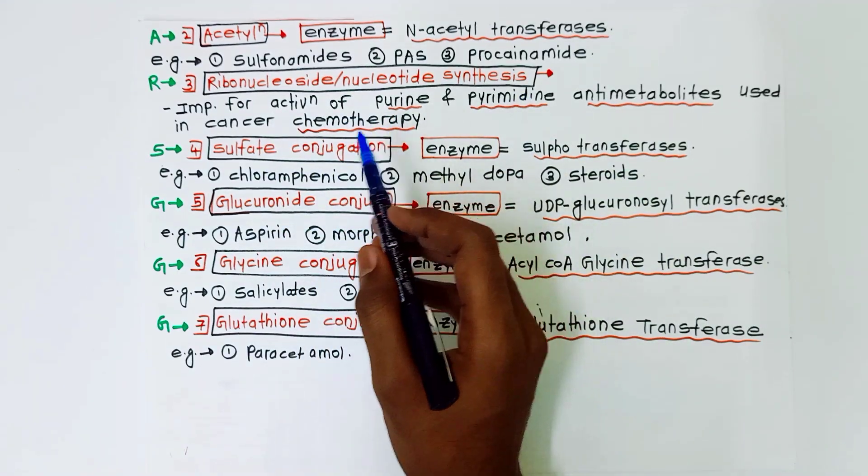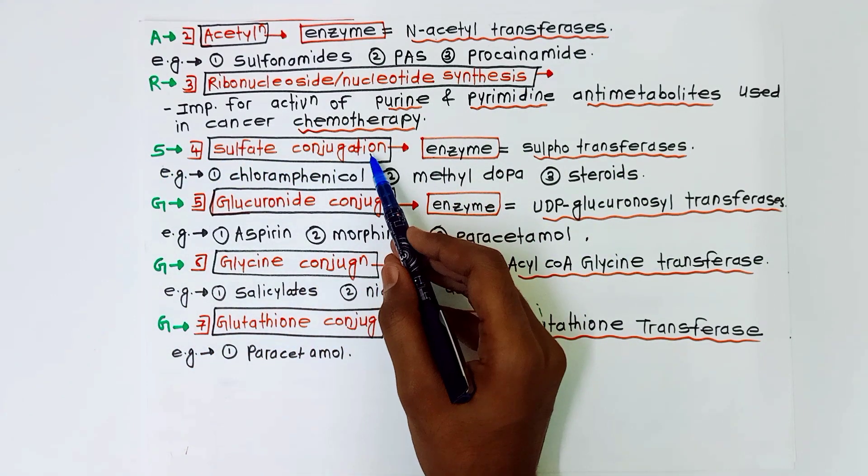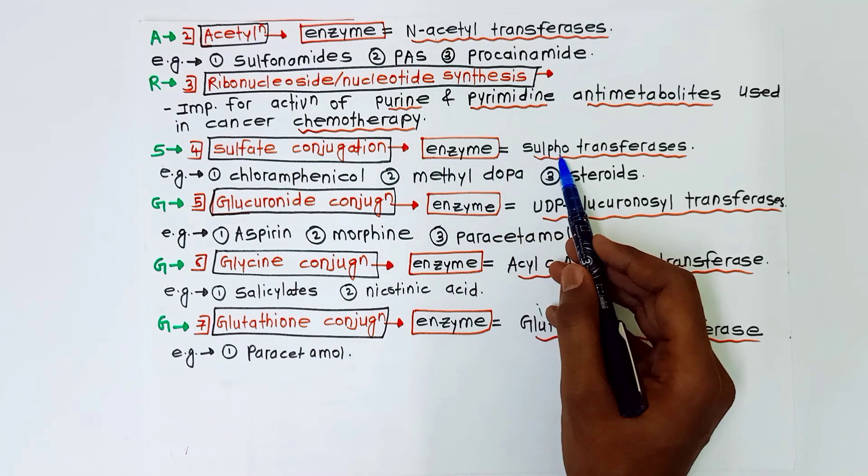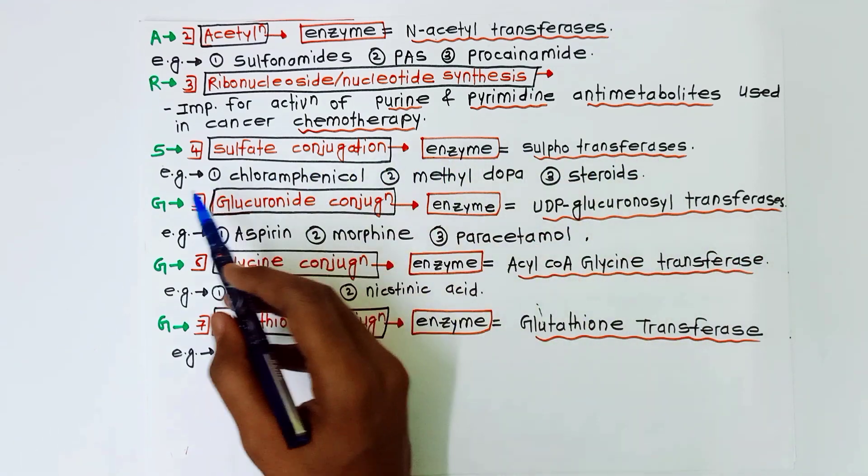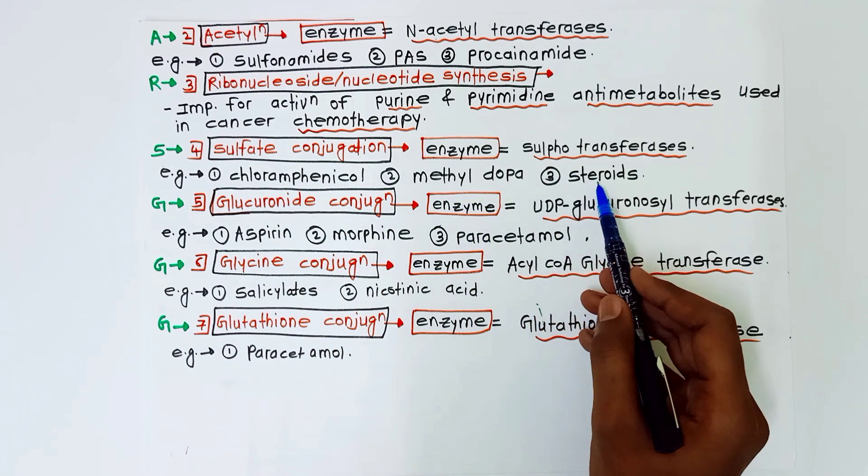Next is S for sulfate conjugation. Enzyme is sulfotransferases and examples are chloramphenicol, methyl dopa, and steroids.